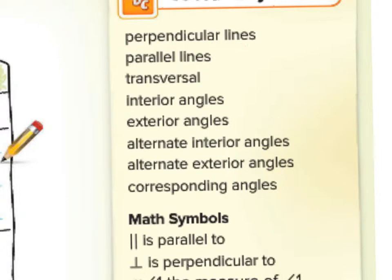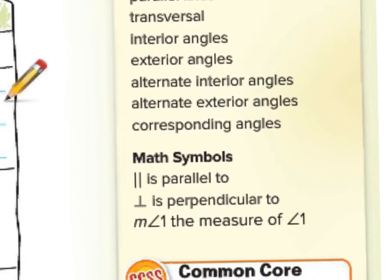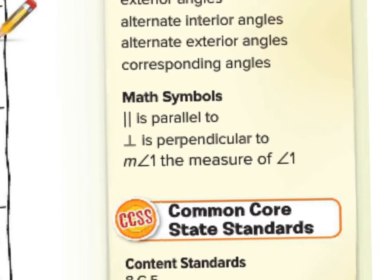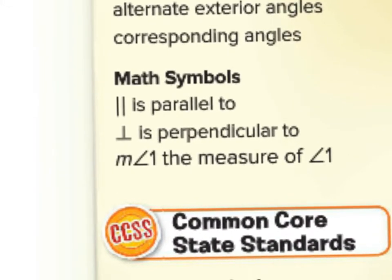The vocabulary terms are: perpendicular lines, parallel lines, transversal, interior angles, exterior angles, alternate interior angles, alternate exterior angles, and corresponding angles. We also have some math symbols that we're going to be using.